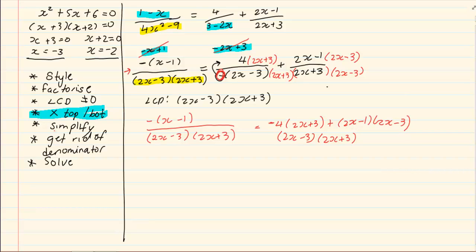Because the denominators are the same, you can simply get rid of them. Leaving us with minus into x minus 1 is equal to minus 4 into 2x plus 3 plus 2x minus 1 into 2x minus 3. Simplify and solve for x.